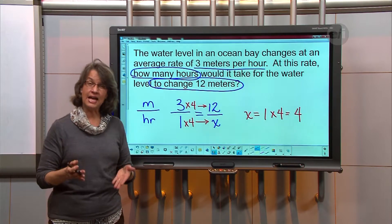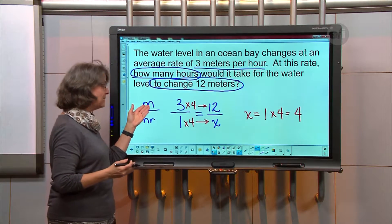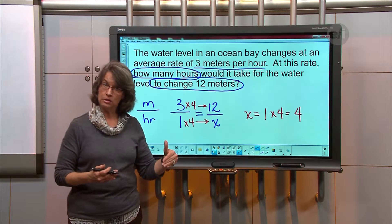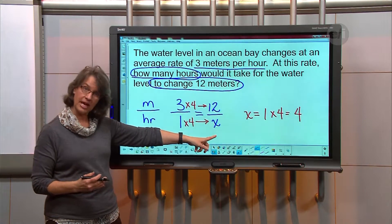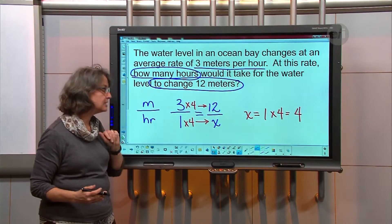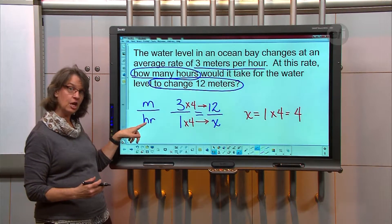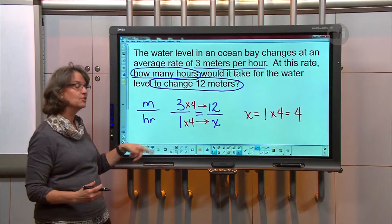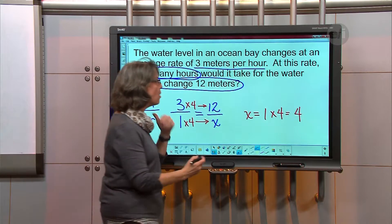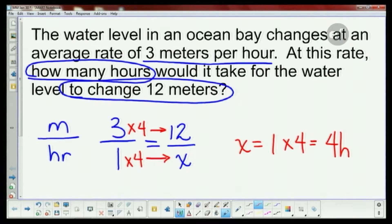But don't forget to label. Is it 4 meters or 4 hours? Well you got to look at where the x is located. It's located in the denominator or in the bottom. So what did I say in my base ratio? I said the bottom was hours. So it's going to be 4 hours to get to 12 meters. All right, so that's one way you could do tonight's math maze.